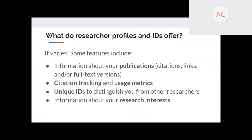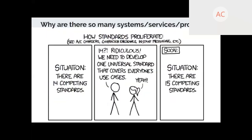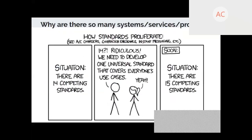The profiles and systems we're going to talk about offer different things. Generally they often have information about your publications — citations, links, or full text versions. Some offer citation tracking and usage metrics, some offer unique ID numbers to distinguish you from other researchers, and some offer information about your research interests helpful in locating collaborators. The ones we'll focus on today are NC Docs — based here at UNCG — ORCID, Google Scholar, and Scopus from Elsevier.